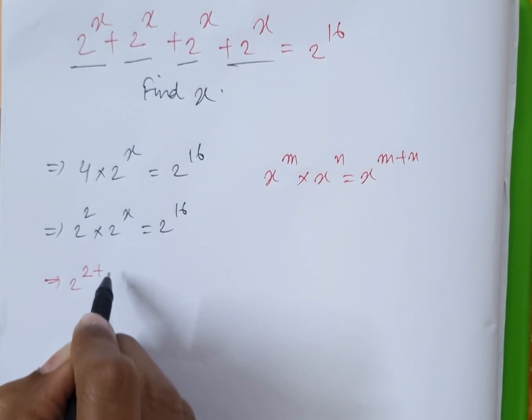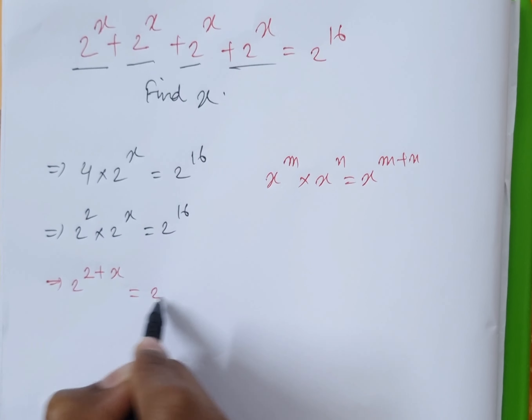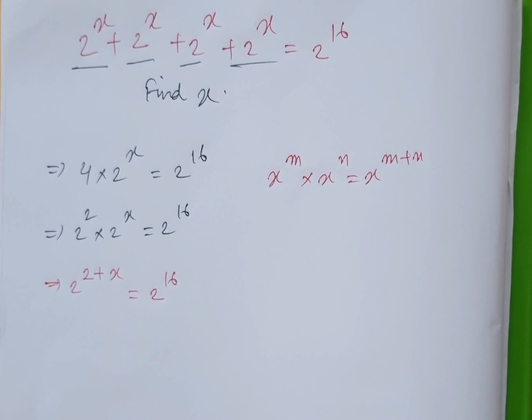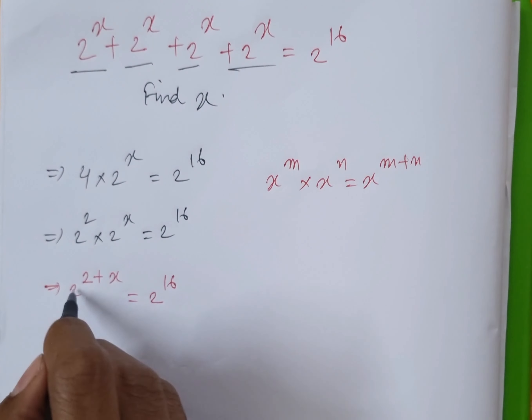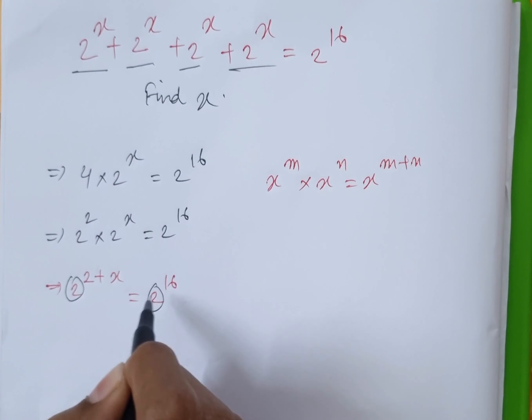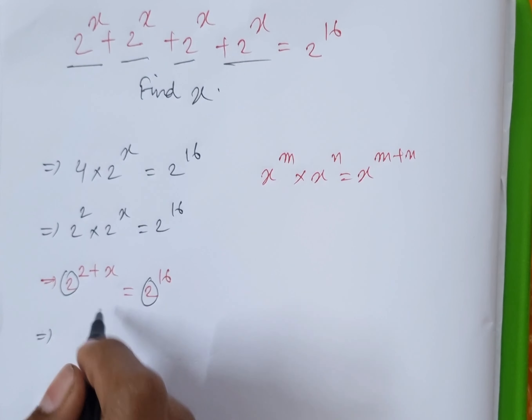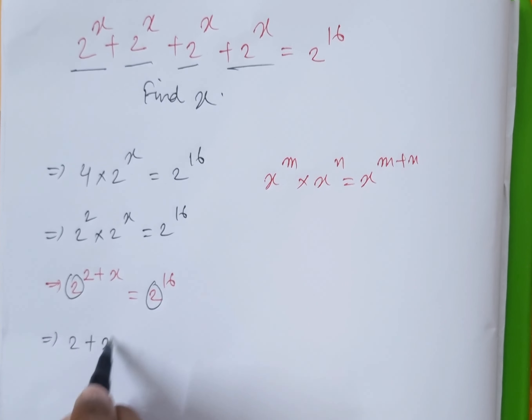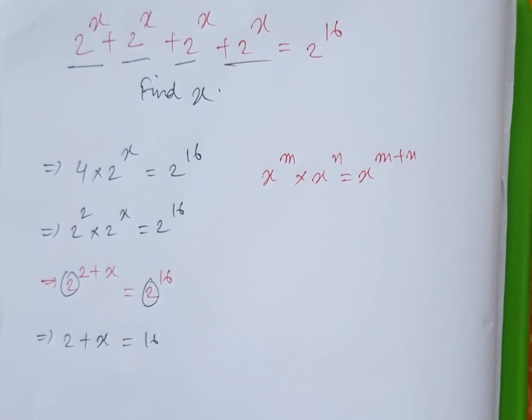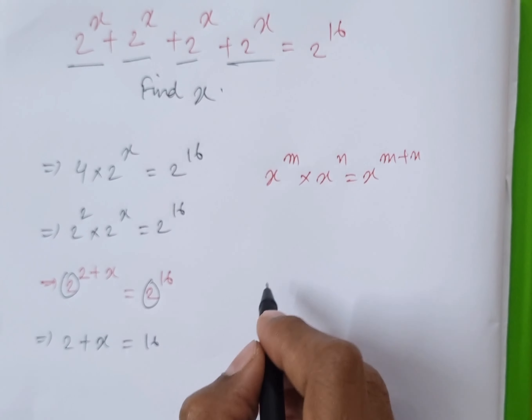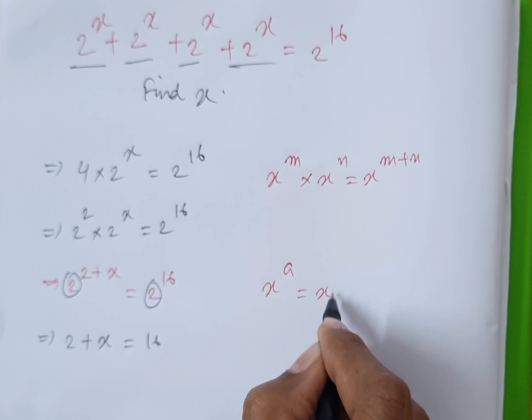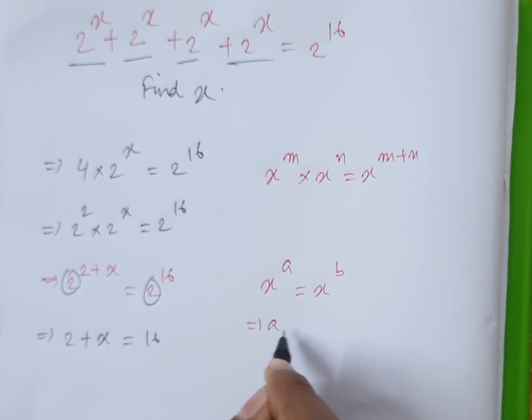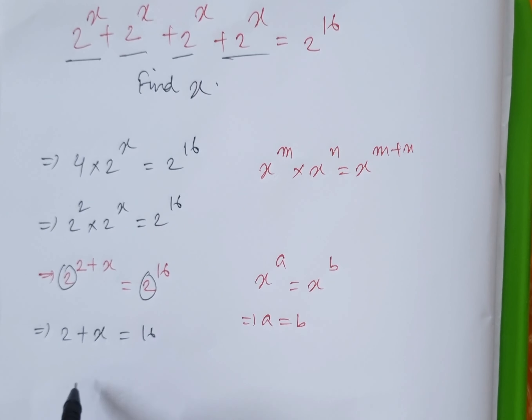We can write this as 2 to the power 2 plus x equals 2 to the power 16. Now we can see that they both have the same base 2, so we can write 2 plus x equals 16, because there is a rule that x to the power a equals x to the power b, then a equals b.